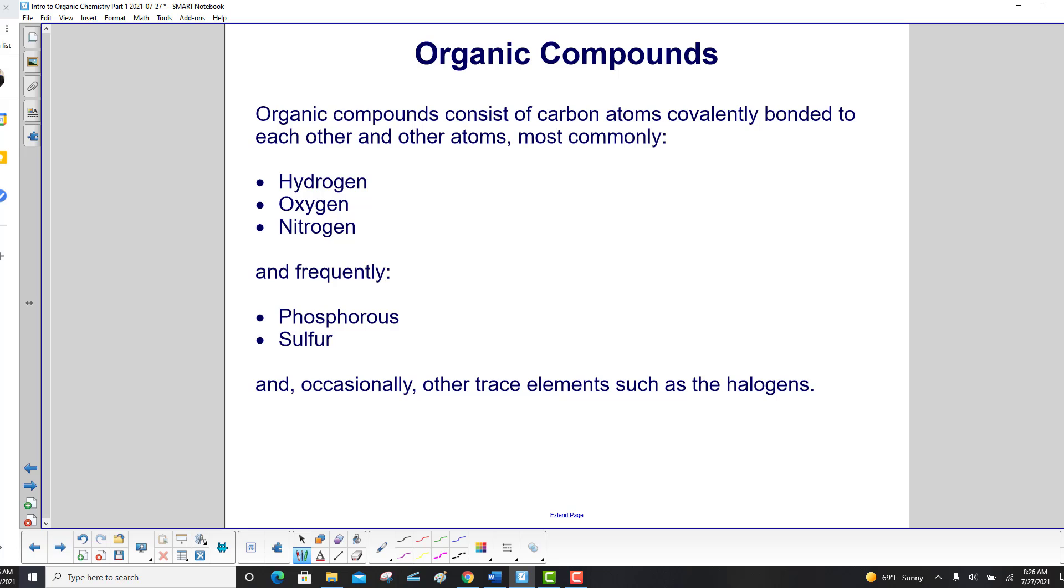Organic compounds consist of carbon atoms covalently bonded to each other and other atoms, most commonly hydrogen, oxygen, and nitrogen, and frequently phosphorus and sulfur, and occasionally other trace elements such as the halogens.